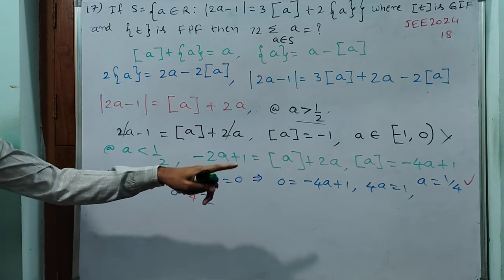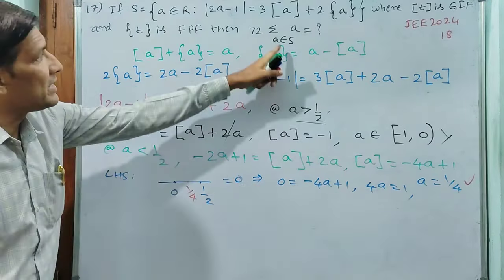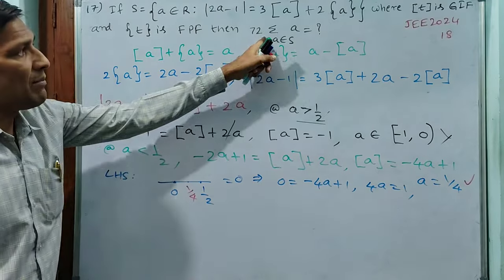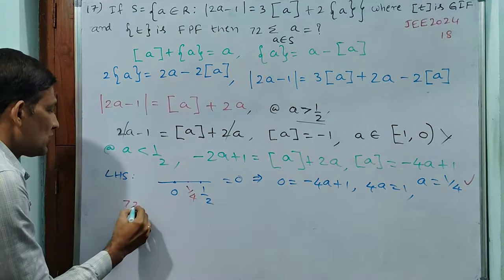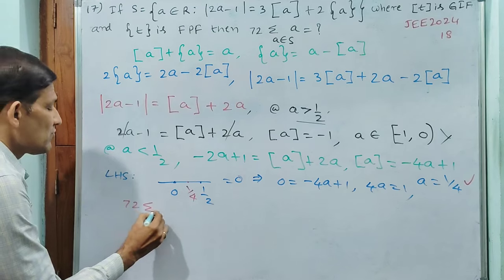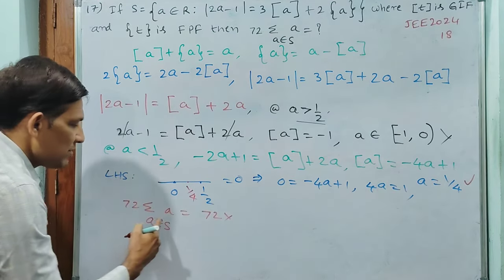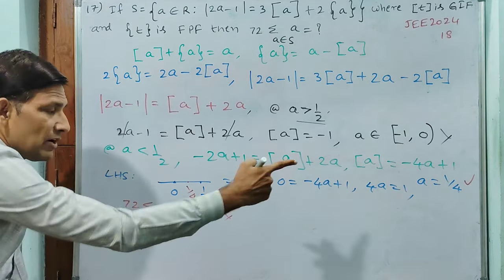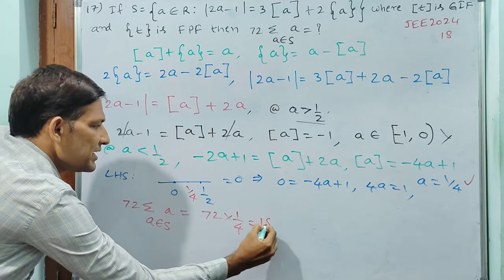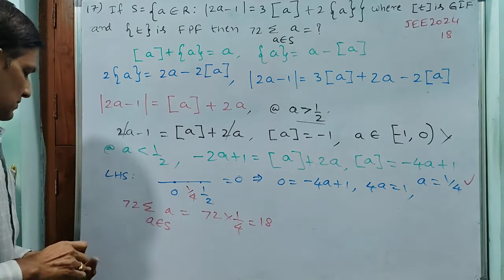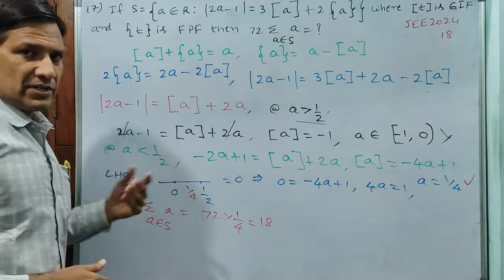Finally, we have got only one value of a, which is 1/4. So 72 times sigma over a belonging to S of a equals 72 times 1/4, which equals 18. This is your answer. Let us go for the next question.